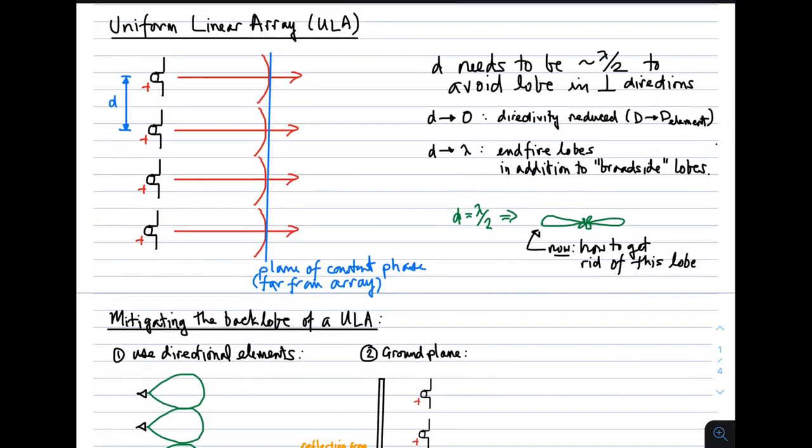This brings us to the Uniform Linear Array. The distinction I'm calling the ULA is that the desired lobe is now broadside to the elements. The elements are arranged co-linear, their excitations are in phase, and that results in a broadside beam. All these elements add in phase in this direction, their phase fronts line up, so I get a very strong lobe in one direction. I also get that lobe in the other direction.